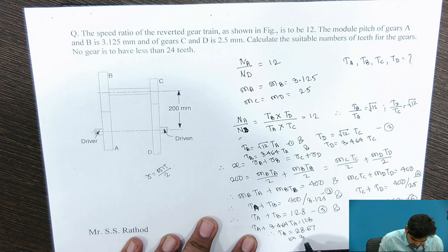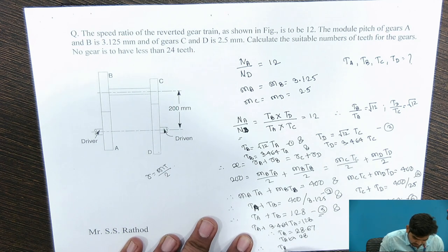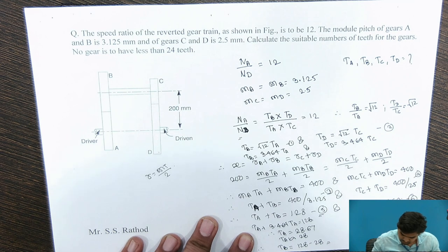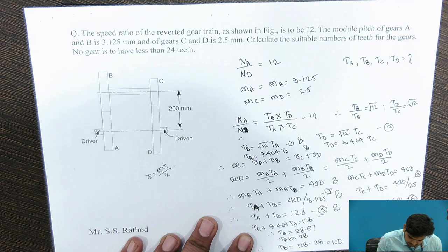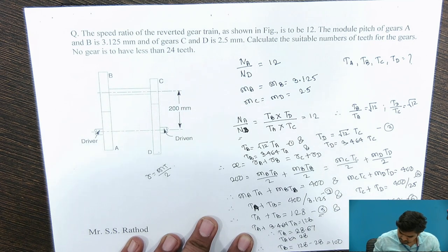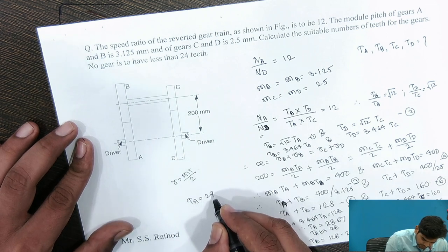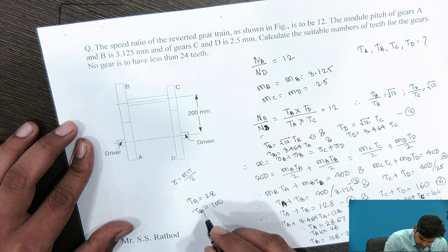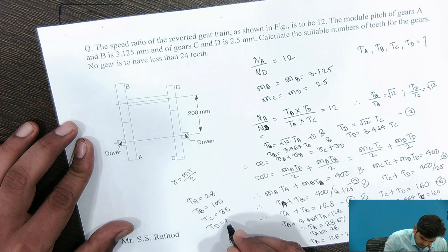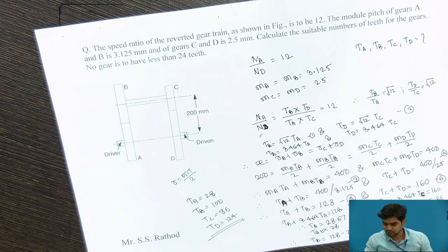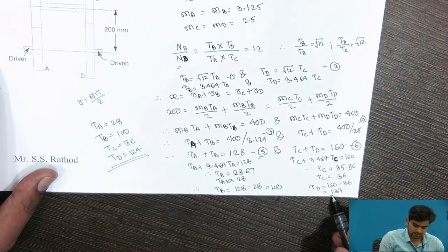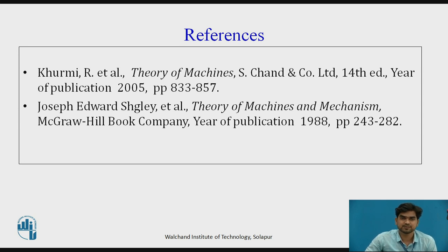Rounding to whole numbers: TA = 28 and TC = 36. Substituting back: TB = 128 − 28 = 100 and TD = 160 − 36 = 124. So the final answers are TA = 28, TB = 100, TC = 36, and TD = 124. These are the references. Thank you.